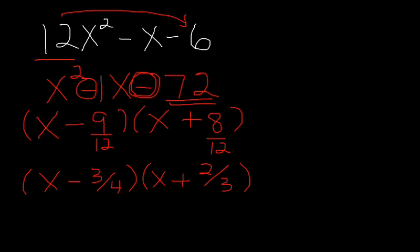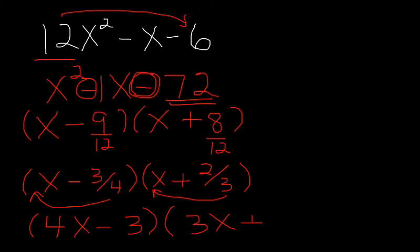Now this method that we're using to factor is called bottoms up, because right now we take what's on bottom of the fraction and we move it to the front on each one of our factors and that becomes 4x minus 3. Do the same thing on the second factor, move that up. That becomes 3x plus 2. And those are our factors for our original trinomial 12x squared minus x minus 6.